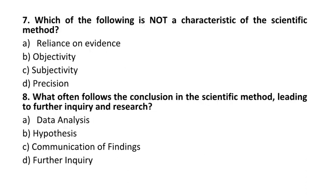Question 7: In the scientific method, which of the following is NOT a characteristic? A. Reliance on evidence. B. Objectivity. C. Subjectivity. D. Precision. Correct answer is C: Subjectivity.